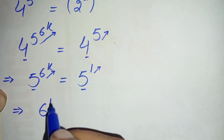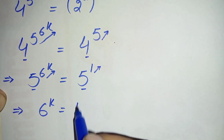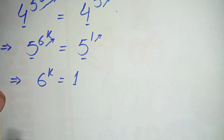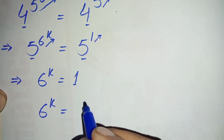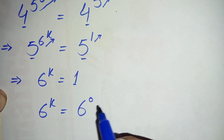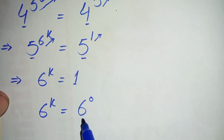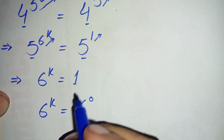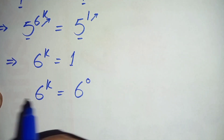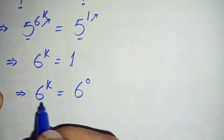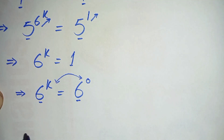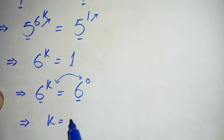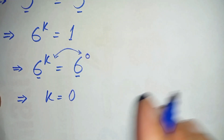We have 6 raised to power k is equal to 1. We know we can write 1 as 6 raised to power 0, because any non-zero number raised to power 0 is always equal to 1. So we have 6 raised to power k equals 6 raised to power 0. Comparing the powers, this implies k is equal to 0.